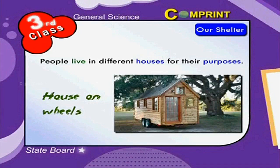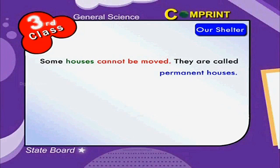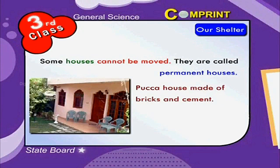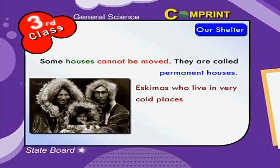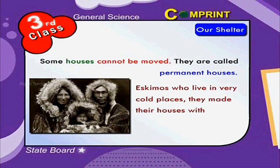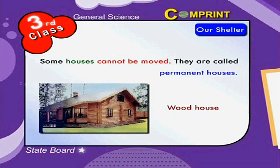Some houses cannot be moved; they are called permanent houses, like a pakka house made of bricks and cement, and a kacha house made of mud and straw. Eskimos, who live in very cold places, make their houses with ice blocks — they are called igloos.